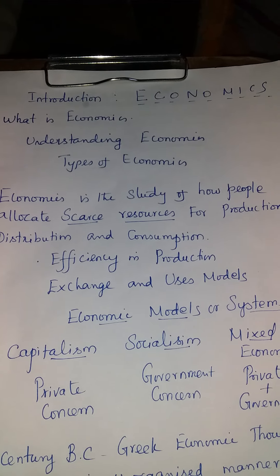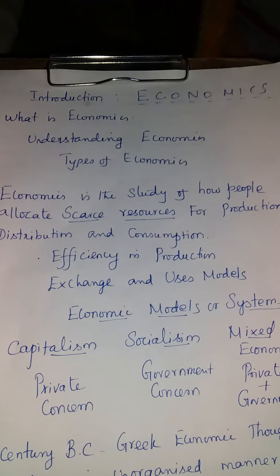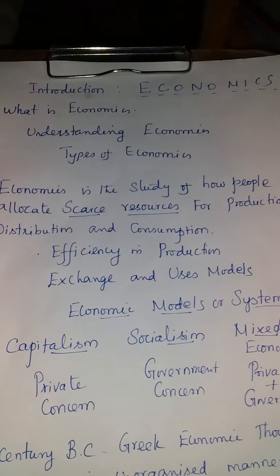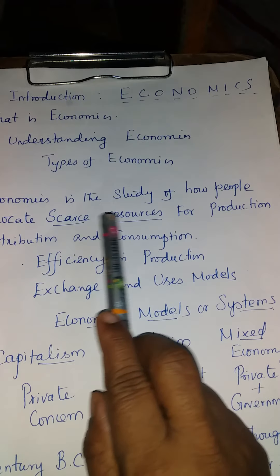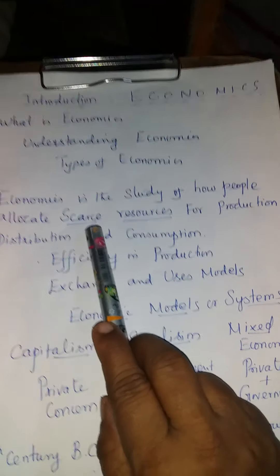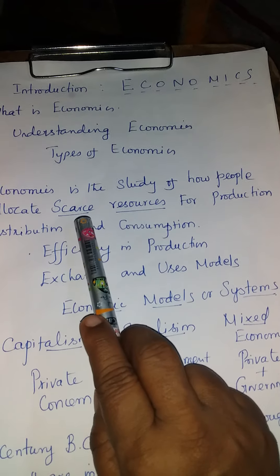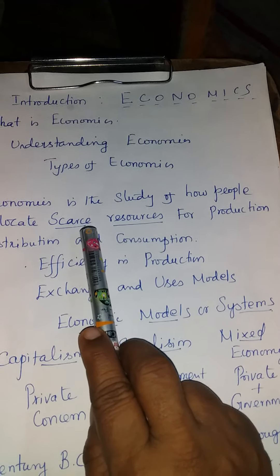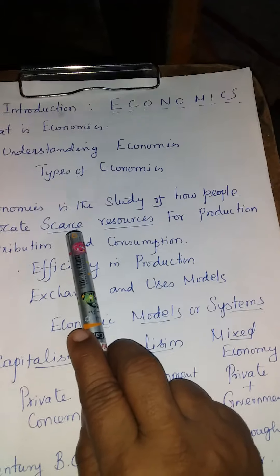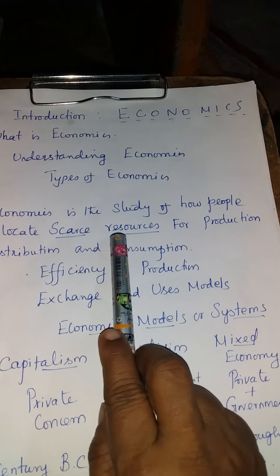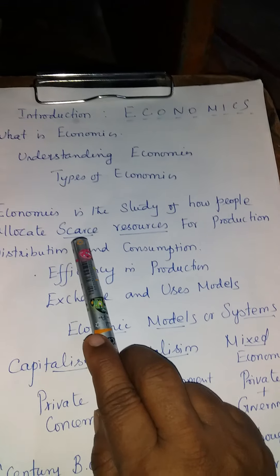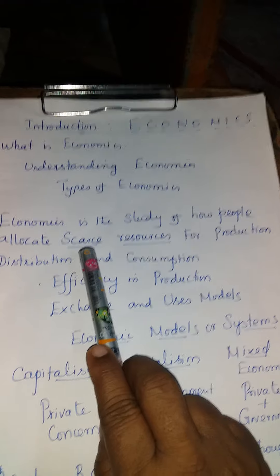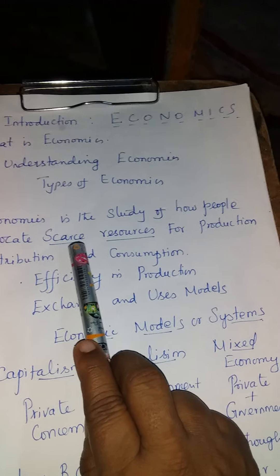We already know from 6th or 7th standard, we studied something about economics. Economics is a study of how people allocate their scarce resources. Definitely, in this world the resources are very scarce. If you take iron resources, bauxite, mountains, or rivers, we can calculate them — the resources are limited. That is why we call them scarce resources.